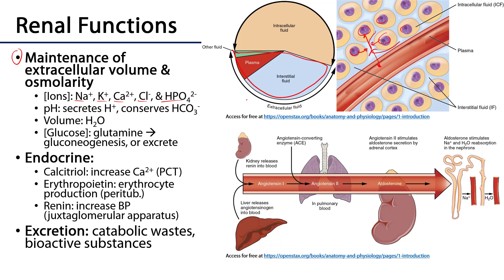In the process of dynamically deciding whether to keep or excrete ions, the kidneys are going to have a profound impact on the maintenance of pH homeostasis. In particular, in a region of the nephron called the distal convoluted tubule, there are opportunities to secrete protons or conserve and hold onto bicarbonate ions, which are very important in the context of the carbonic acid–bicarbonate ion buffer system for pH homeostasis in the blood.